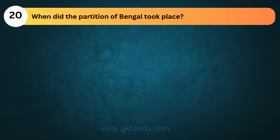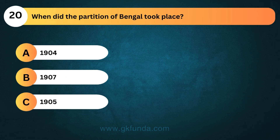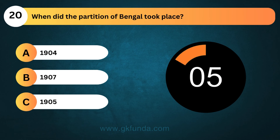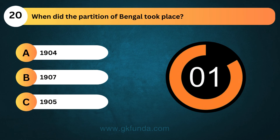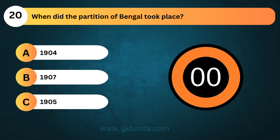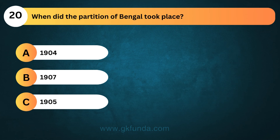When did the partition of Bengal take place? The answer is option C, 1905.